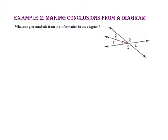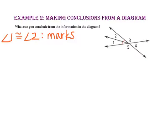In Example 2, we are going to make conclusions based on a diagram. Notice how angle 1 and angle 2 have congruent arcs — we can definitely conclude angle 1 and angle 2 are congruent. Looking for vertical angles: this ray and this ray are opposite rays, and this ray and this ray are opposite rays. Therefore, angle 3 and angle 5 are vertical angles.